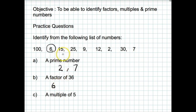15 goes twice but there's remainders. 25 goes once with remainders. 9 will go into 36 four times, so 9 is also a factor of 36. 12 goes into it 3 times, so 12 is a factor of 36. And 2 goes into it 18 times, so 2 is also a factor.